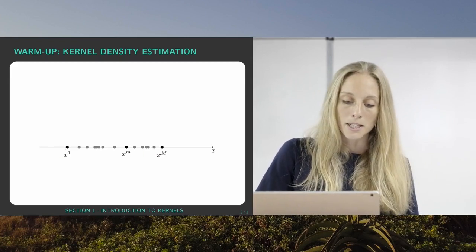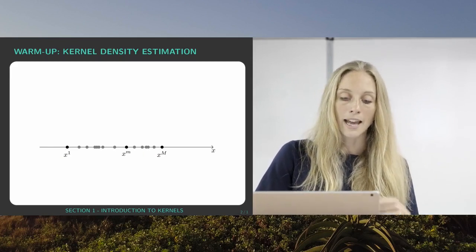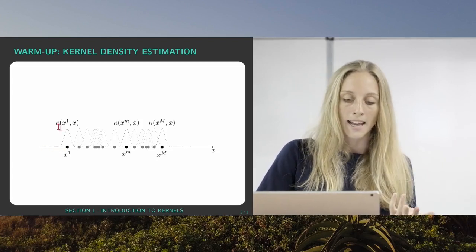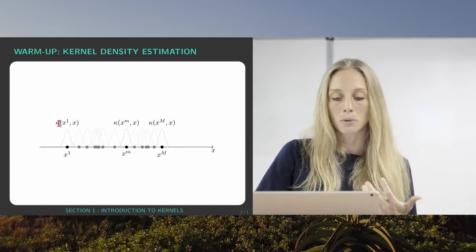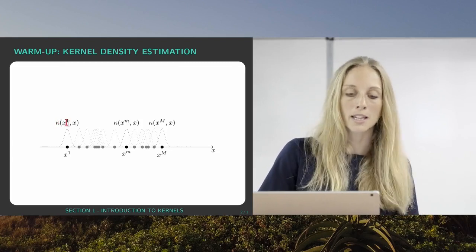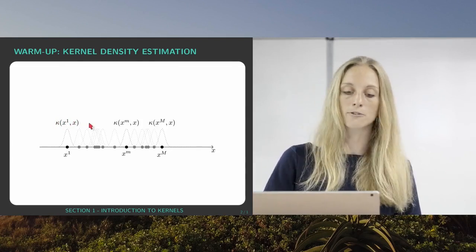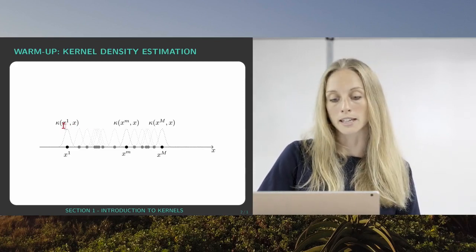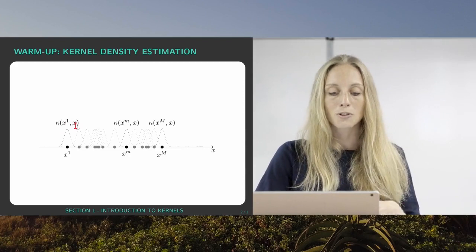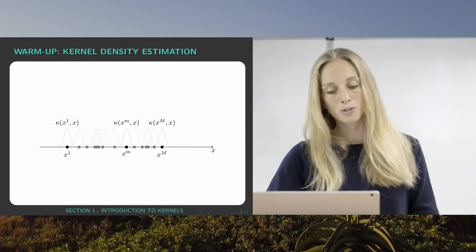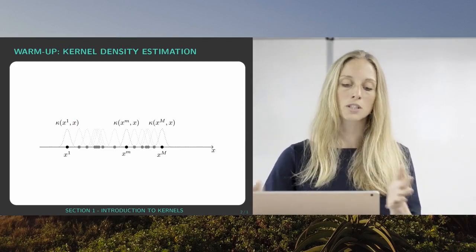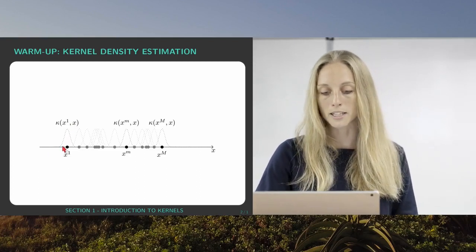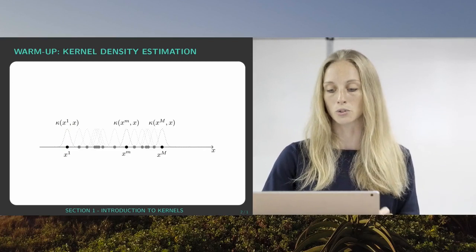Let's say now at each data point we actually anchor a similarity measure, a kernel which we always call kappa. And kappa takes the data point where it sits as the first input and as the second input any other data point. So basically it defines a similarity measure between the first input or the first data vector and any other point. And you see the kernel I chose now is a Gaussian kernel so this means that at a certain distance the kernel decays to zero here. And I can now in every data point anchor one of these kernels.